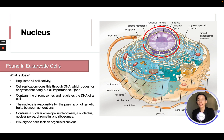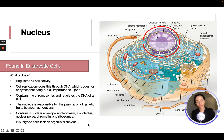The nucleus contains a nuclear envelope, a nucleoplasm, a nucleolus, a nuclear pore, chromatin, and ribosomes. Prokaryote cells lack an organized nucleus — there is no nucleus in prokaryote cells.